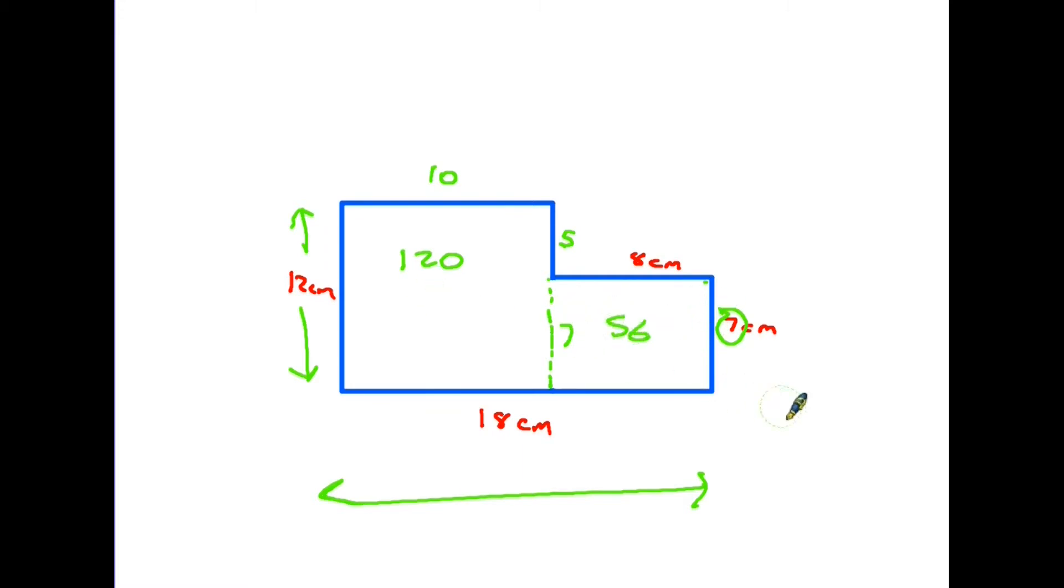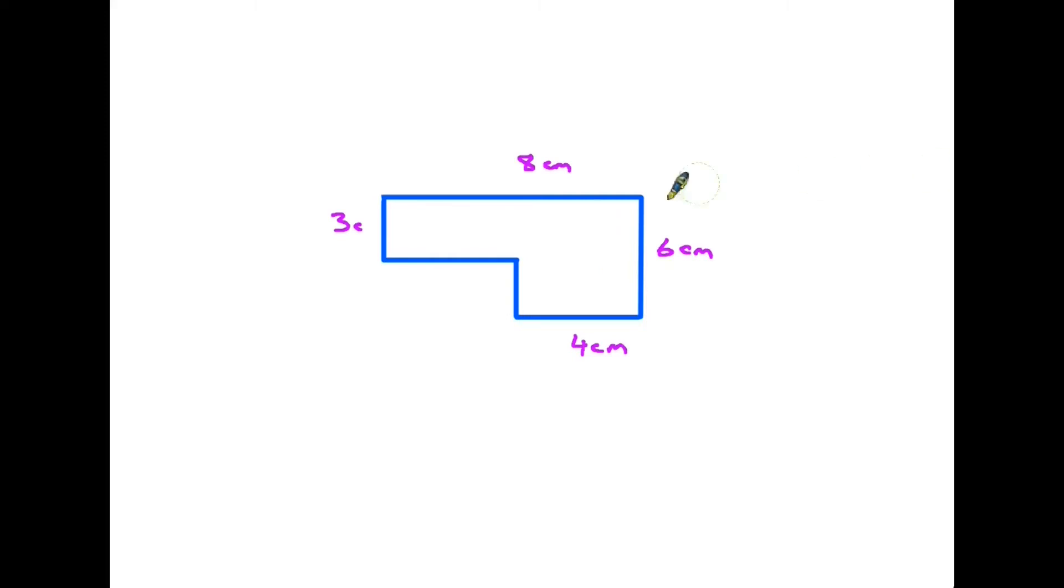Let's do a final example here. A similar thing, we've got a shape with a corner missing. This time I am going to choose to take my line across that way. So now I've broken my shape down into a top rectangle here and a smaller one. Can I work out the area of these rectangles? Well the top one I've got the numbers for, it's 8 times 3, so the top one is 24.